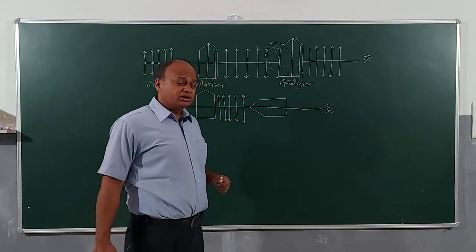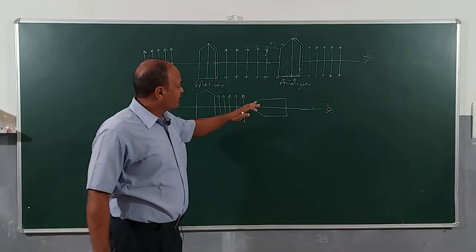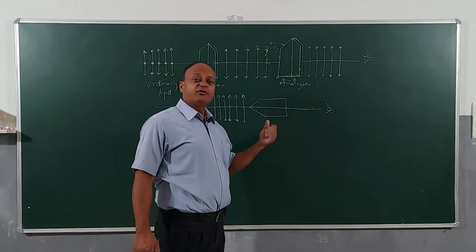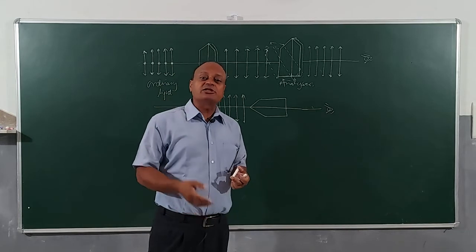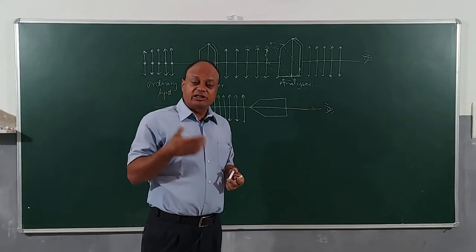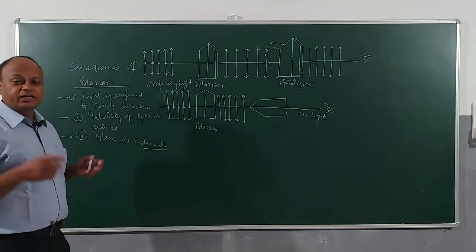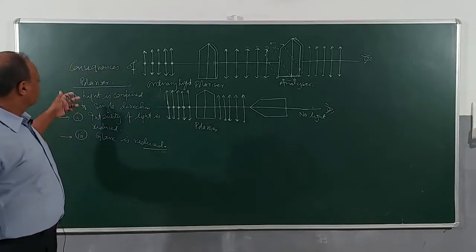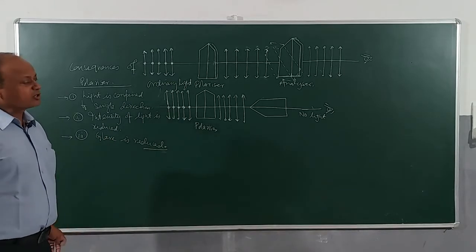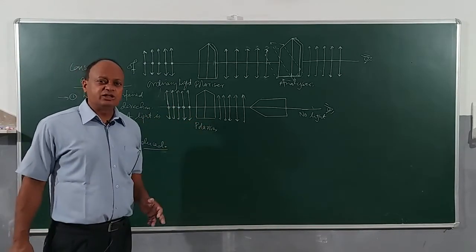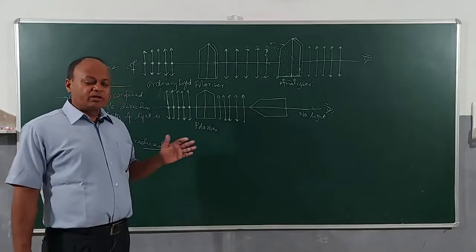There was a physicist named Malus who studied the variation of intensity as the analyzer crystal is rotated. We will be discussing Malus's law. Before that, understand the consequences of polarization: first, light is confined to a single direction; second, intensity of light is reduced; and third, glare is also reduced. Intensity of light or any wave is directly proportional to amplitude. So when intensity is being reduced, it is about reducing the amplitude.